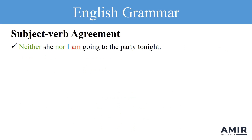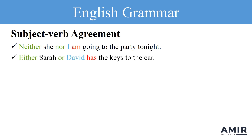Neither she nor I am going to the party tonight. So, in the initial question, the reason we used am is that the verb needs to agree with the subject I. Now, let's see more examples.